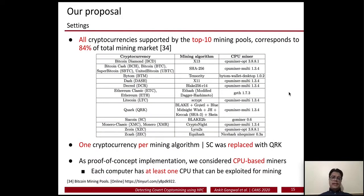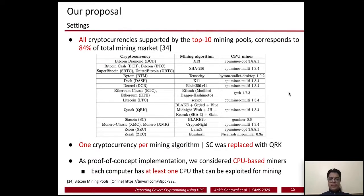In our evaluation we consider all cryptocurrencies supported by the top 10 mining pools. The table shows the cryptocurrencies, their mining algorithms, and the CPU miners used in our experiments. We considered one cryptocurrency per mining algorithm since we focus on algorithms. The Siacoin miner was not working at the time of our experiment, so we replaced it with Quark, which has a more complex mining algorithm than any other shown.